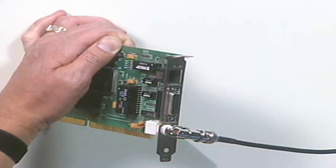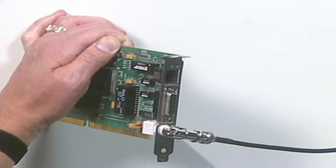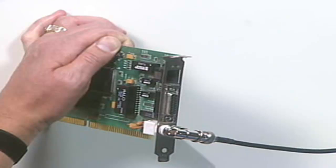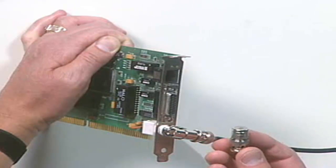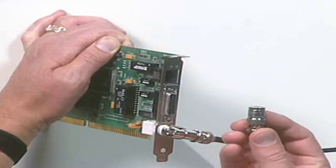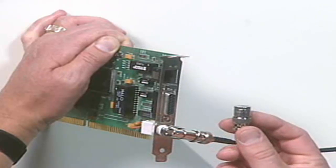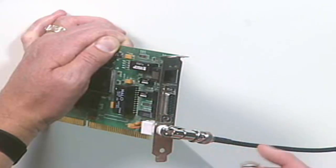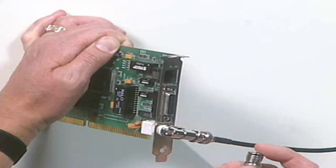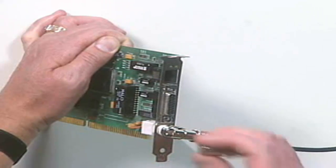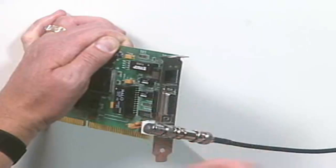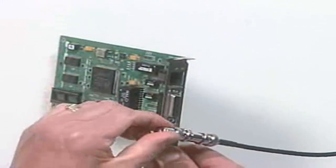Now, 10-base-2 networks, because they're wired as a logical bus, they have to use what's called termination. Just like with a SCSI bus, you have to terminate both ends of a 10-base-2 network segment. Therefore, if this were the last network card on the bus, we would install this terminator right here on the end.